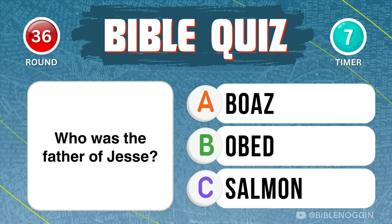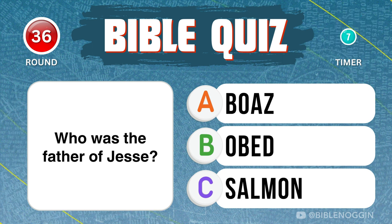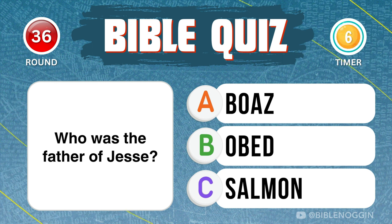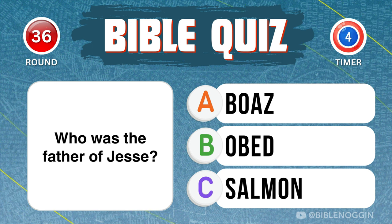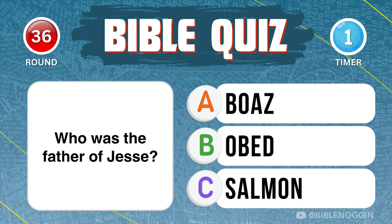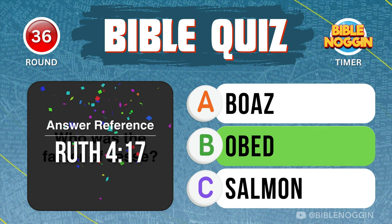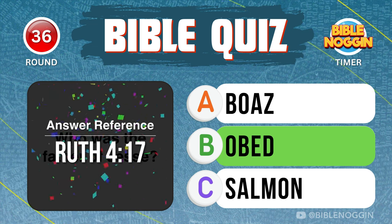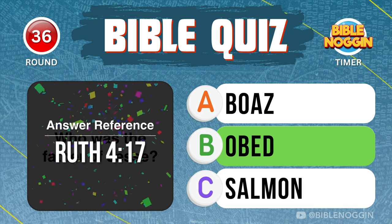Question 36: Who was the father of Jesse? Obed — found in Ruth chapter 4, verse 17.